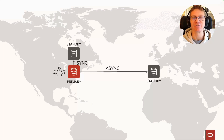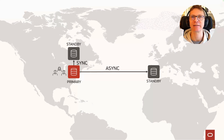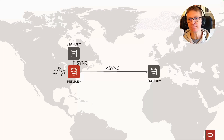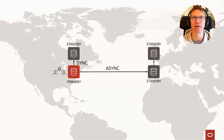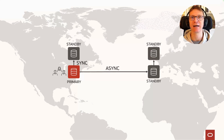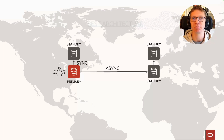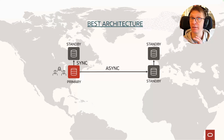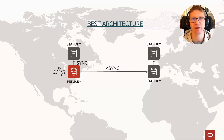The best solution is to have a nearby standby database where the primary can send the redo synchronously to achieve zero data loss. In many cases, that also requires a standby database on the secondary side that provides similar protection for the standby database when it becomes a primary database. This is the best architecture and it's the recommendation of our Maximum Availability Architecture team.